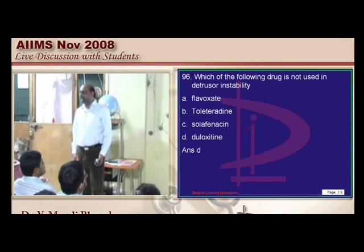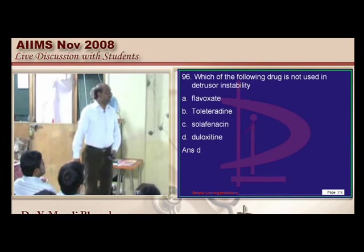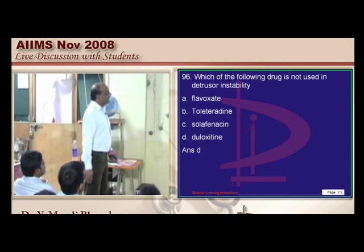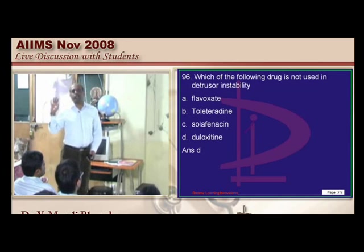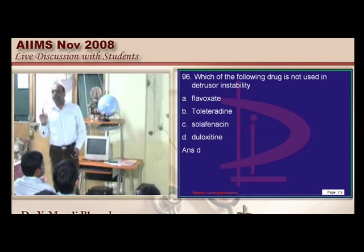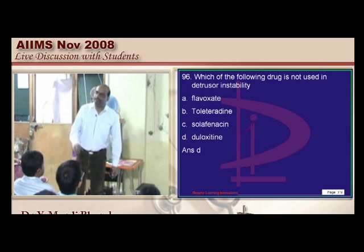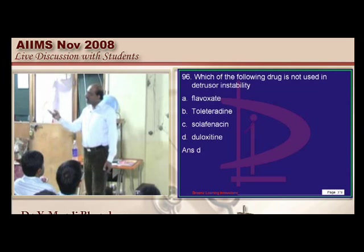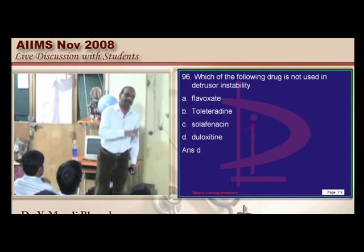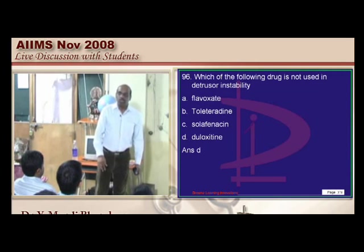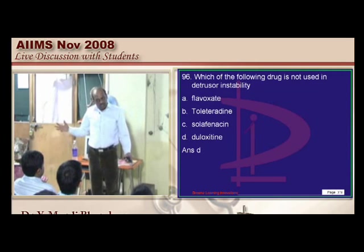This is another challenging question about detrusor instability. Out of all these, which drug is not used? There are two issues: one is called stress incontinence and the other is called detrusor instability, otherwise called urge incontinence. Don't you think those two are opposite phenomena?